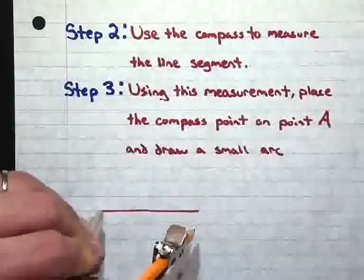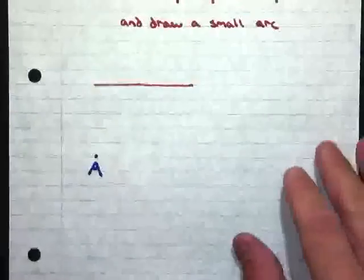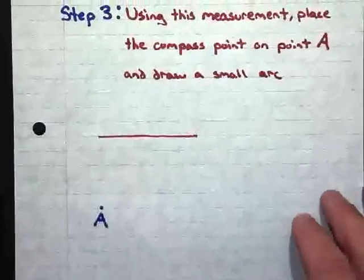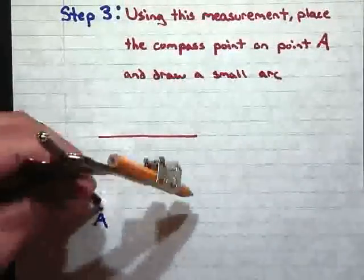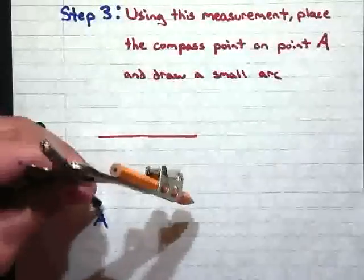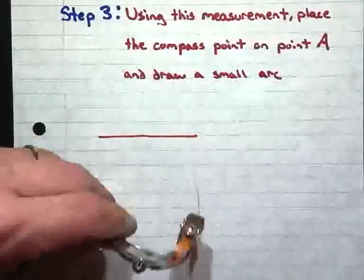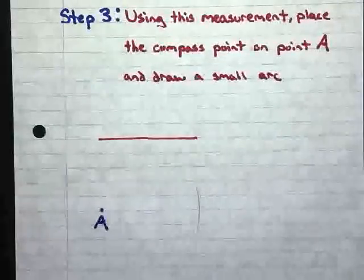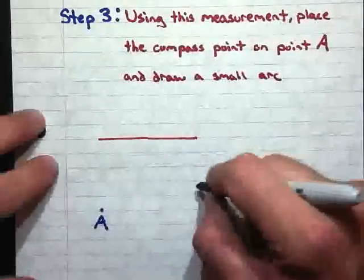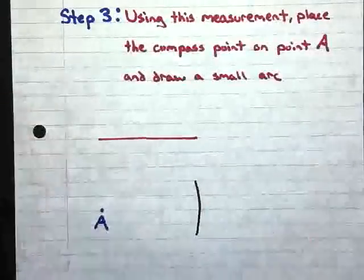For step three, I want to use this measurement and place the compass point at point A. And I want to draw a small arc. So, I place the compass point at A and I draw a small arc. And let me go ahead and shade this in in black so you can see this a little bit better. There's my arc.